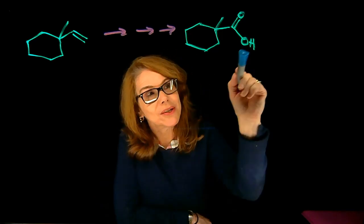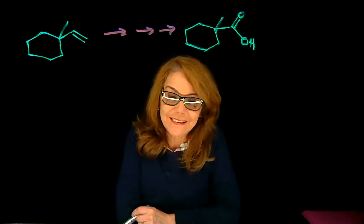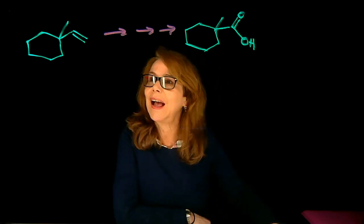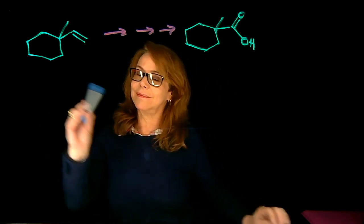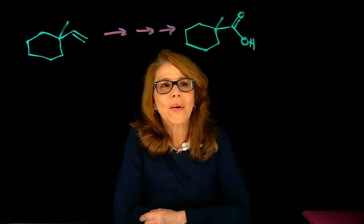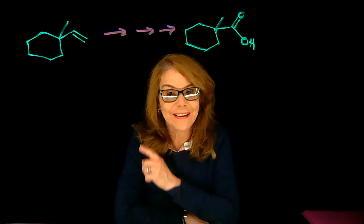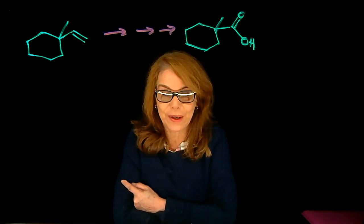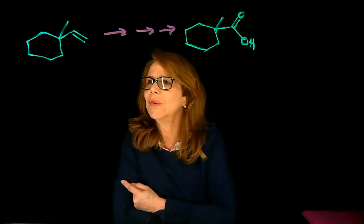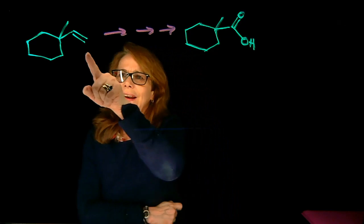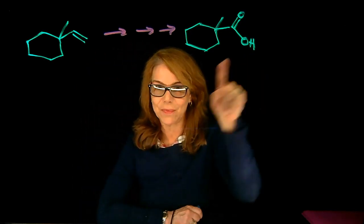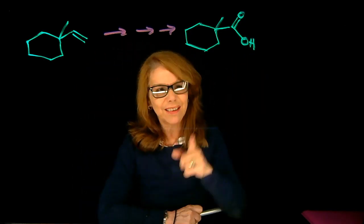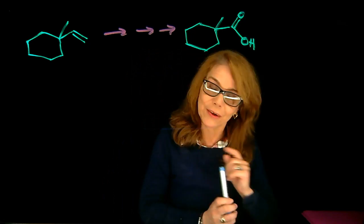In this problem, we want to synthesize the carboxylic acid that we have here from the starting material. We need to always analyze the number of carbons in the compound. Here I see that I have one more carbon compared to that. So how can I make a carboxylic acid?